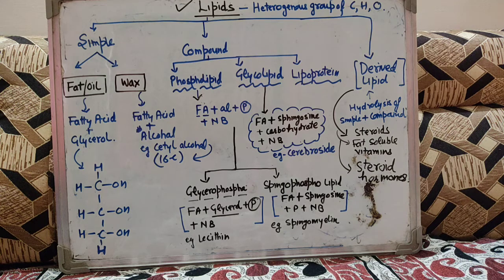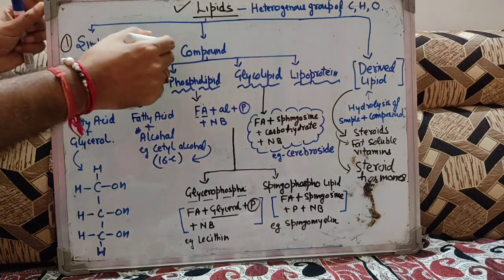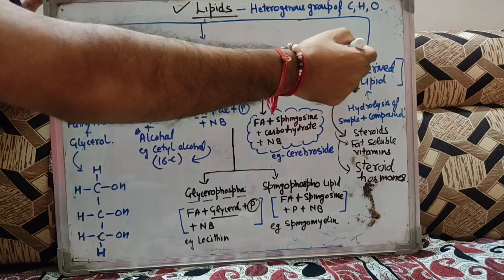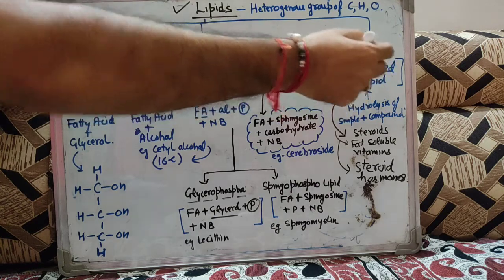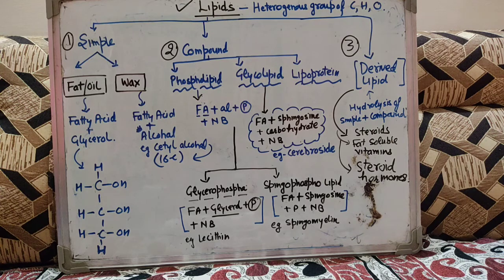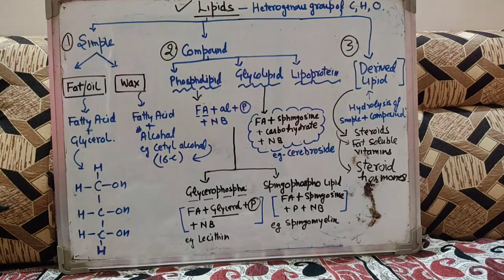When we classify the lipids, अब हम lipids को classify करते हैं — lipids कितने type की हो सकते हैं. Lipids can be classified into three categories: one is the simple lipids, second category could be the compound lipids, और third category that could be the derived lipids.